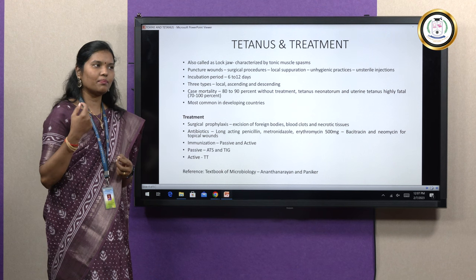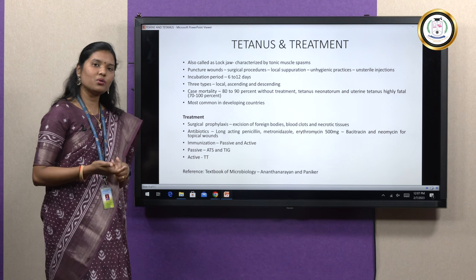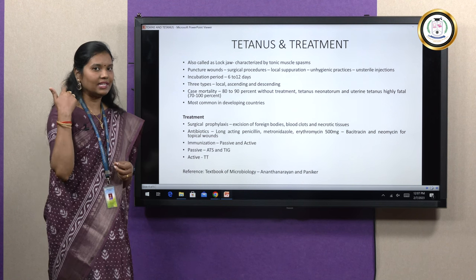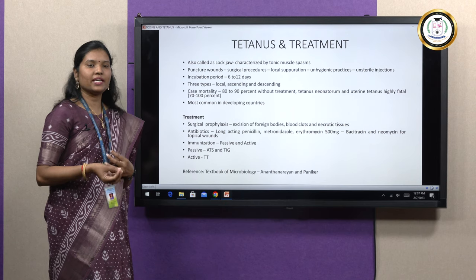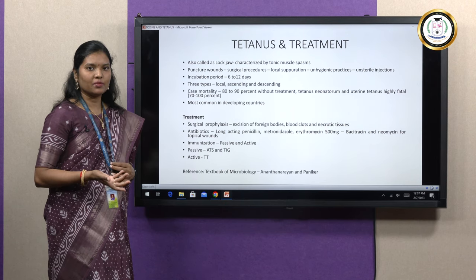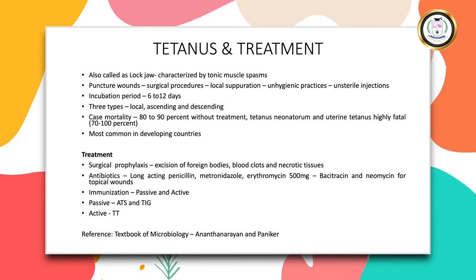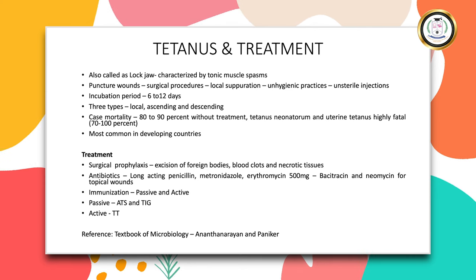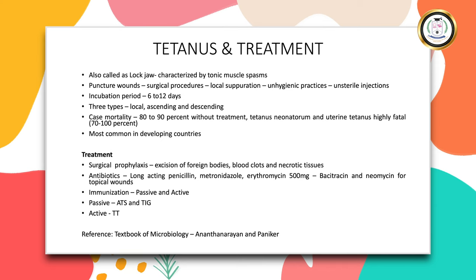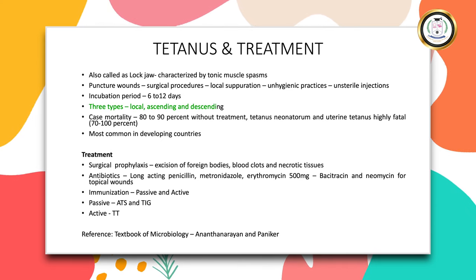If there are any local pus-forming lesions, tetanus could occur through those as well. An example is otogenic tetanus — that is, tetanus in the ear. Tetanus can also be associated with unhygienic practices and rituals like circumcision and ear boring. Tetanus rarely spreads through unsterile injections and needles. The incubation period of tetanus is basically two days to several weeks, but on average it is 6 to 12 days. We have three types of tetanus: local tetanus, ascending tetanus, and descending tetanus.